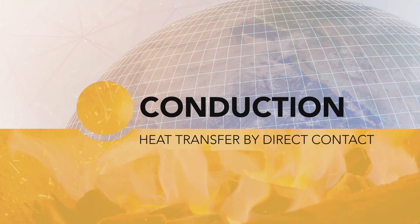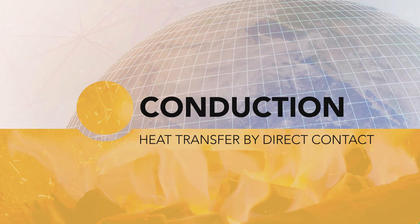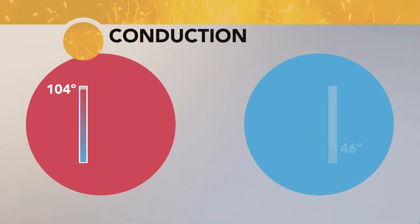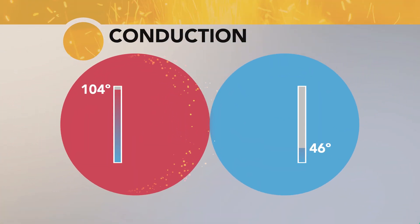The first pathway is conduction, a transfer of heat by direct contact between two solid objects of different temperatures. As the two objects stay in contact, the temperature of the hotter object falls, and the temperature of the cooler object rises, as heat passes between them.